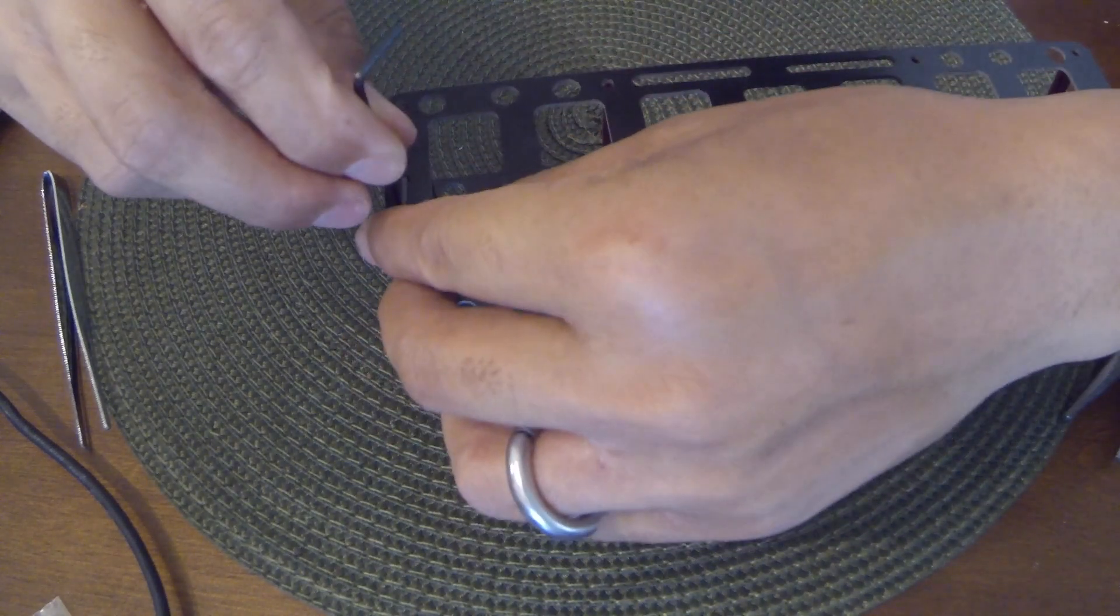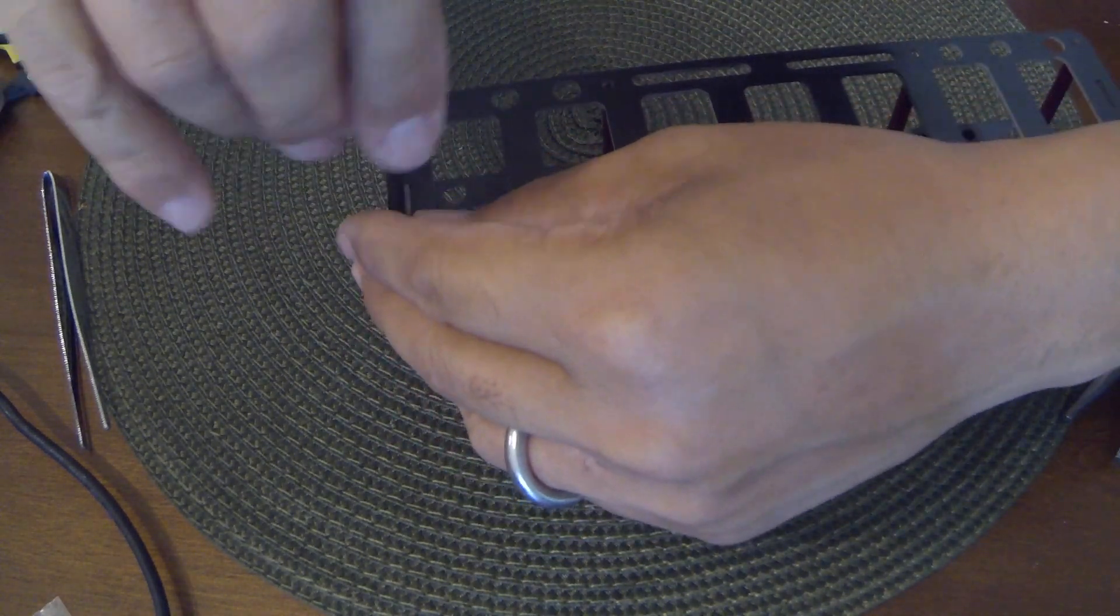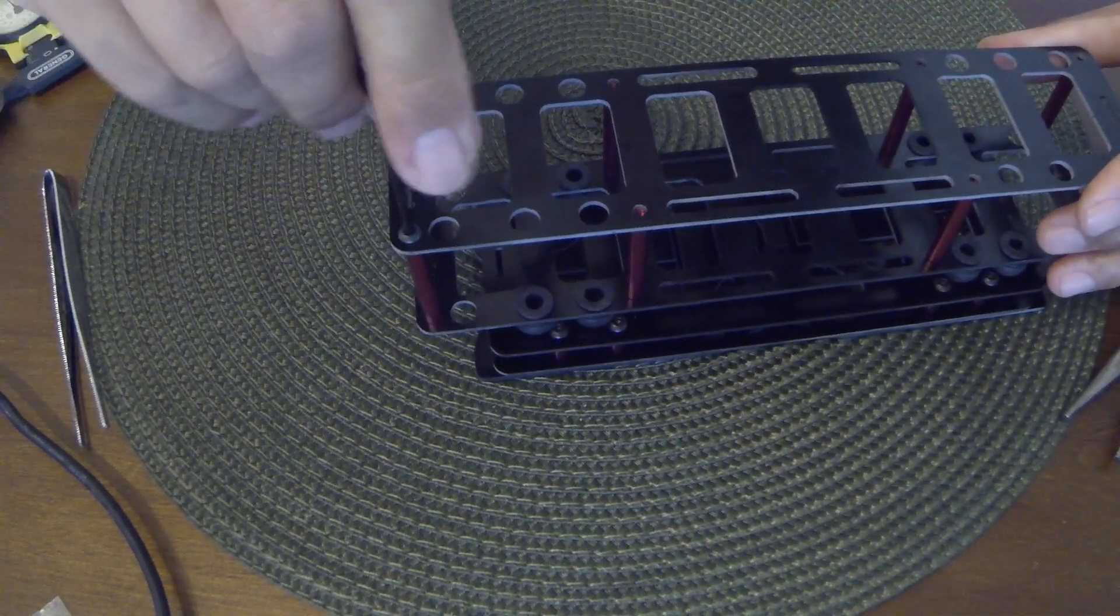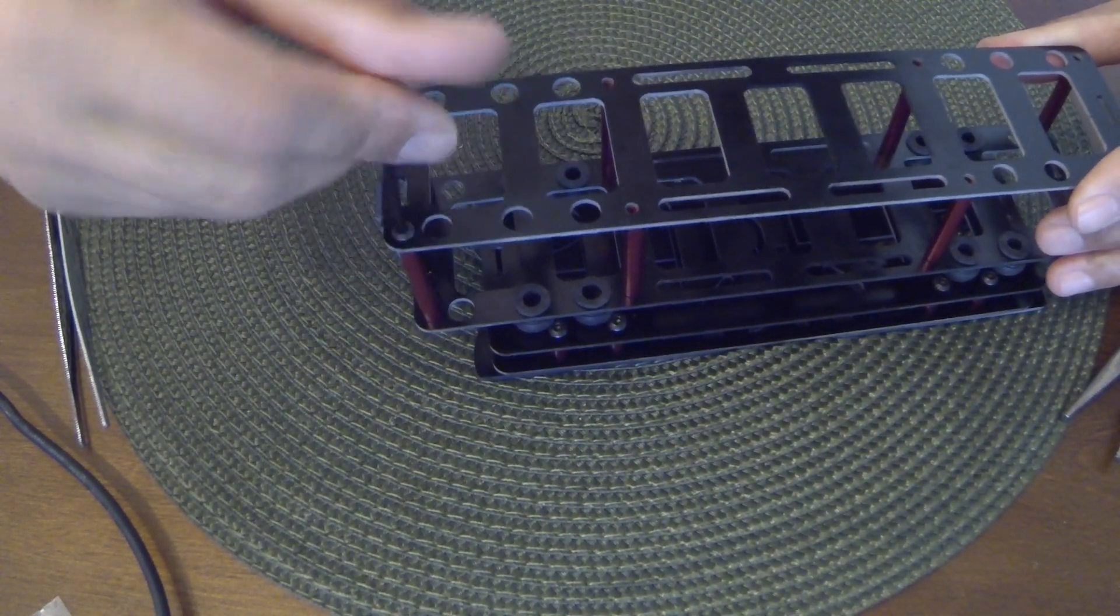And then the next step is fairly easy. Just grab the M3 screws and just bolt the bottom clean plate to the standoffs.